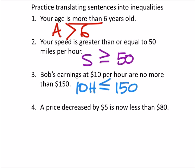On number four, we have a price P decreased by 5. It is now less than $80. And that one, again, was pretty straightforward.